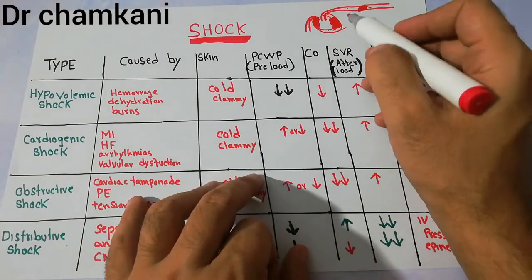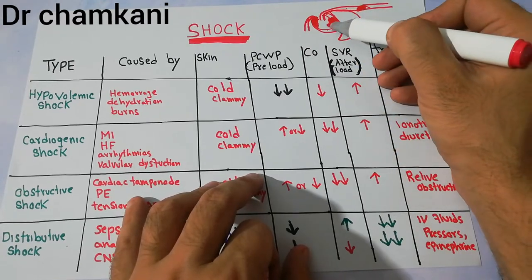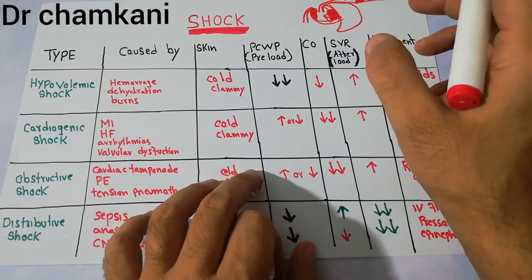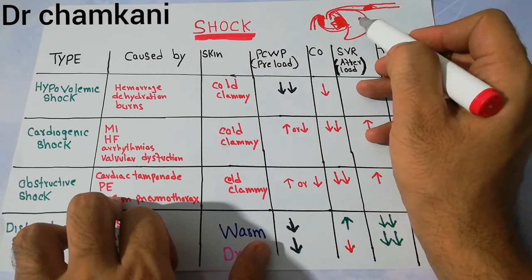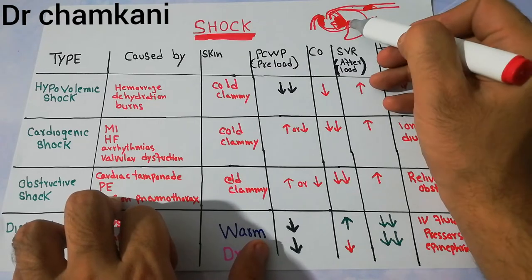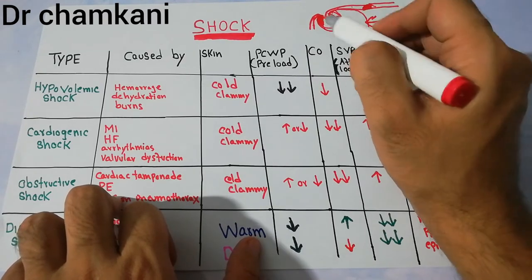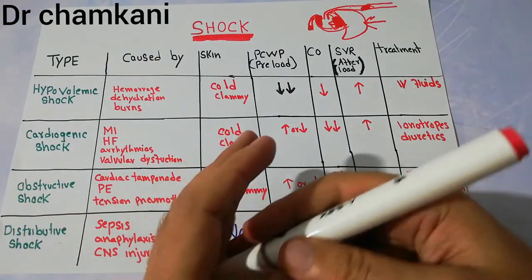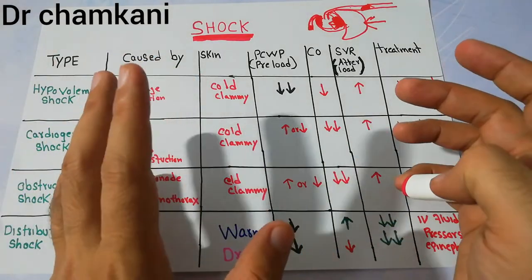Another cause is tension pneumothorax, where collection of air outside the lung presses the heart. This is an emergency condition occurring in road traffic accidents. The air in the pleural cavity causes so much pressure that the mediastinum shifts, applying pressure on the heart and blocking the return or flow of blood. Cardiac tamponade, pulmonary embolism, and tension pneumothorax all cause obstruction of blood movement.